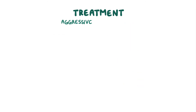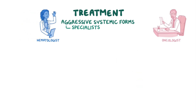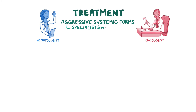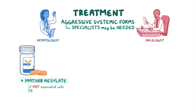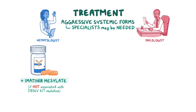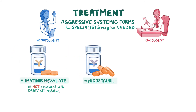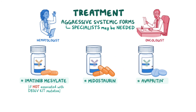In aggressive systemic forms, specialists like hematologists or oncologists may be needed to target more aggressive management. Several medications have been approved by the FDA to treat aggressive systemic mastocytosis, including imatinib mesylate, if not associated with a D816V KIT mutation, midostaurin, and most recently avapritinib.